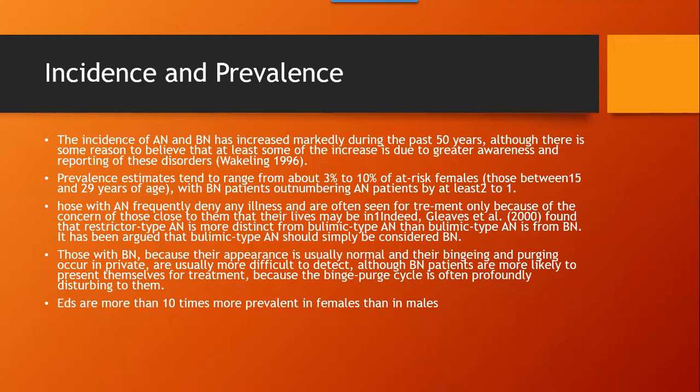Those with anorexia frequently deny any illness and are often seen for treatment only because of the concern of those close to them. Research found that restrictor-type anorexia is more distinct from bulimic anorexia than bulimic anorexia is from bulimia. Those with bulimia, because their appearance is usually normal and their binging and purging occur in private, are usually more difficult to detect. Eating disorders are more than ten times more prevalent in females than in males, and 95% of cases fall in the age range from 12 to 25.